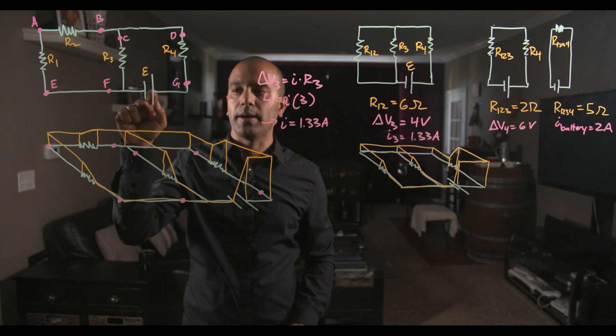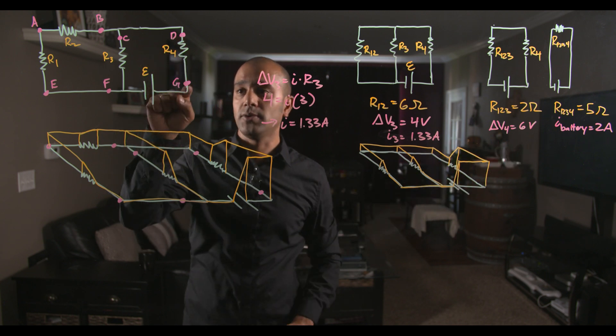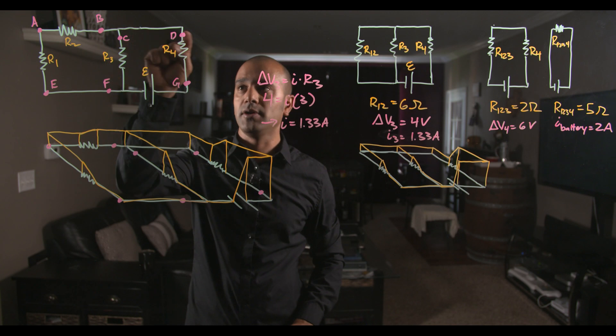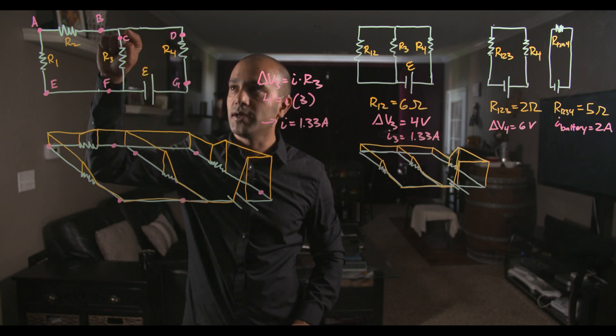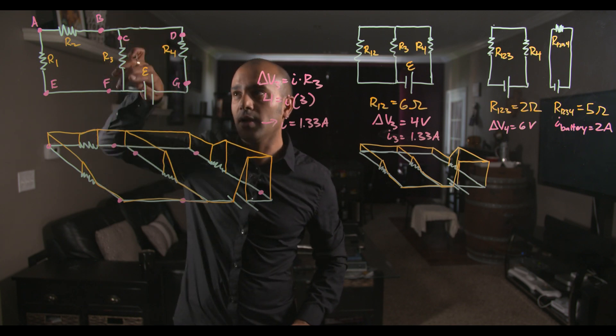So we have 2 amps coming out of the battery, which we saw in the first step. That 2 amps stays 2 amps because you haven't reached any forks in the circuit. Once you get to right here, the current has to fork into these two branches.